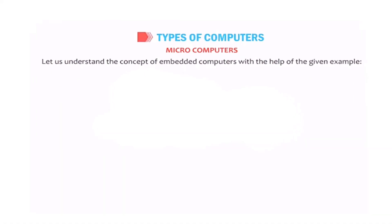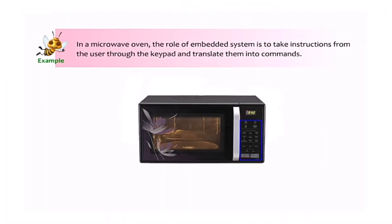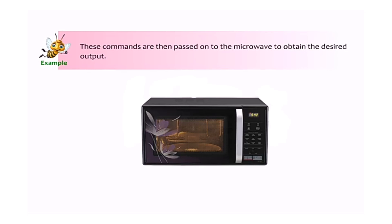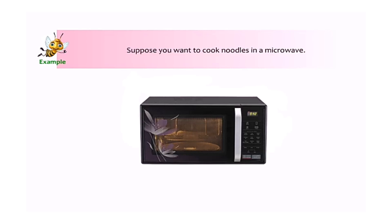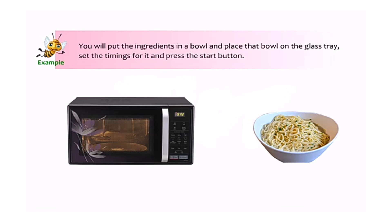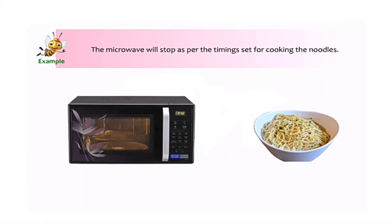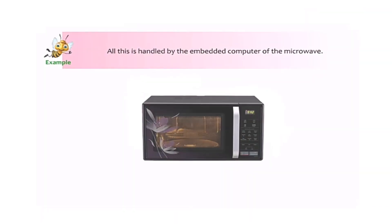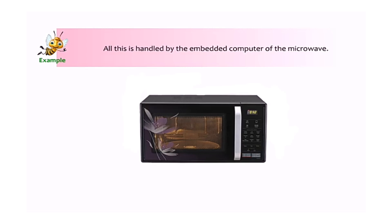Let's understand embedded computers with an example. In a microwave oven, the embedded system takes instructions from the user through the keypad and translates them into commands, which are then passed on to the microwave to obtain the desired output. For instance, to cook noodles, we put the ingredients in a bowl, place it on the glass tray, set the timing, and press start. The microwave automatically stops as per the set timing — all handled by the embedded computer.